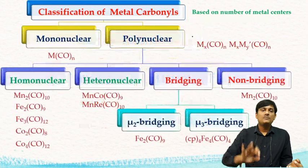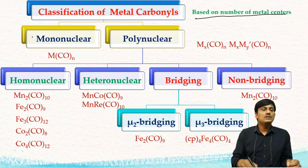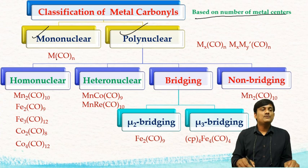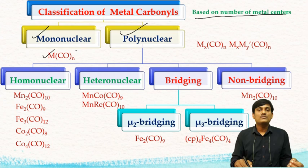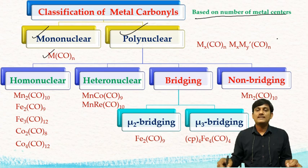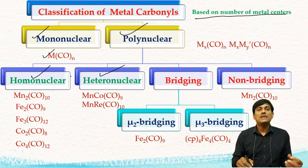Based on the number of metal centers present in the metal carbonyl, you can classify metal carbonyls into mononuclear and polynuclear. Mononuclear means it has one metal center, with general formula M(CO)ₙ. Examples include Ni(CO)₄, Fe(CO)₅, Cr(CO)₆, and V(CO)₆. In polynuclear, you have two or more metals. The general formula is Mₓ(CO)ₙ or MₓM'ᵧ(CO)ₙ. In polynuclear carbonyls, based on the type of metals, you can further classify into homonuclear and heteronuclear.